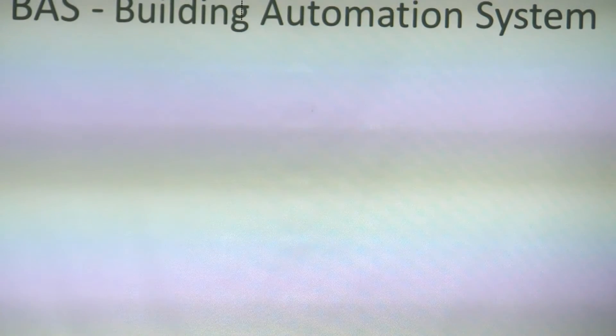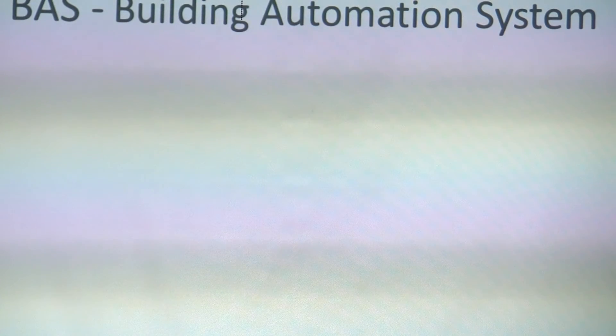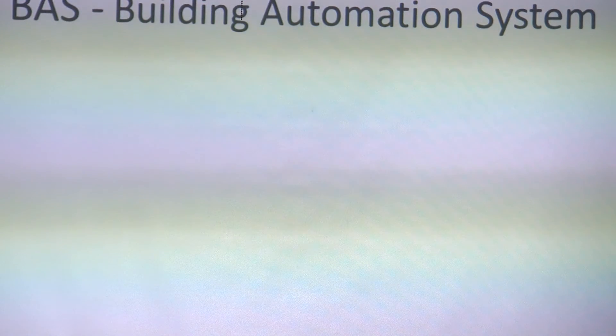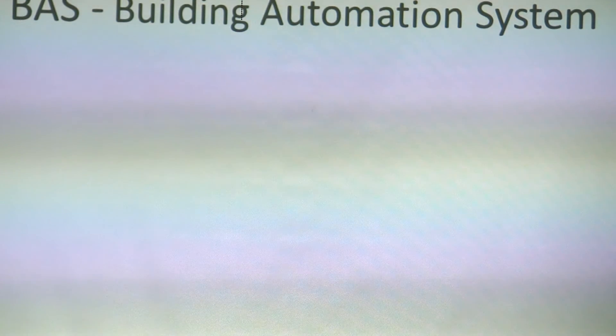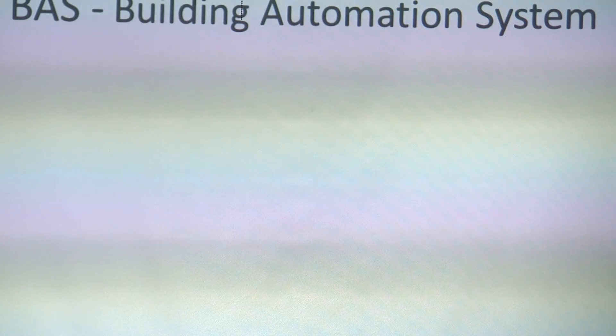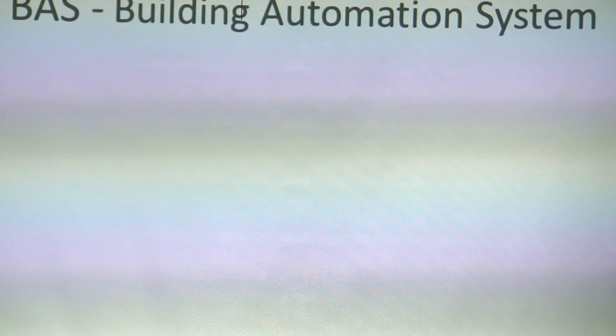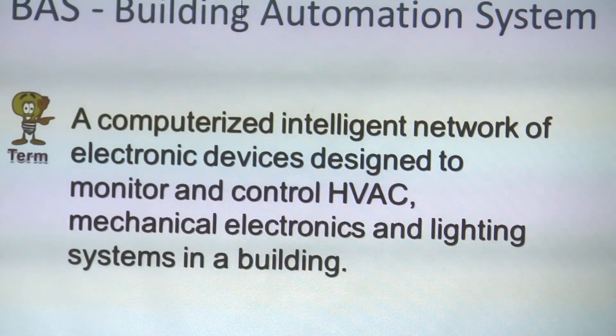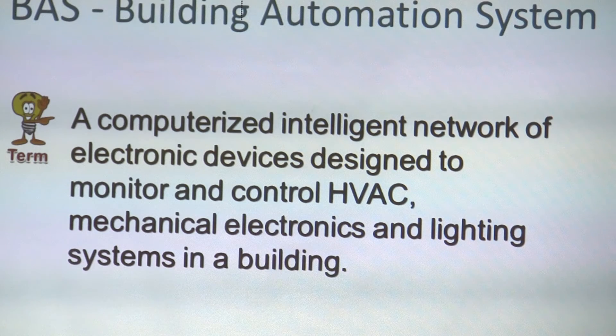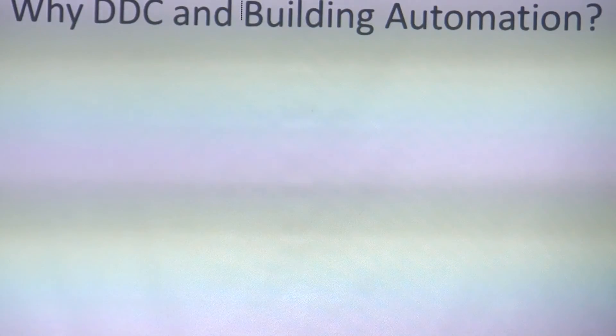BAS stands for Building Automation System. Don't get DDC and building automation system confused. DDC is the product, the programming, and that type of stuff. Once you install it into a building and program that building for what you want, then you have a BAS system. So DDC is what you use for a BAS system. A BAS is a computerized intelligent network of electronic devices designed to monitor and control HVAC, mechanical electronics, and lighting systems in a building.